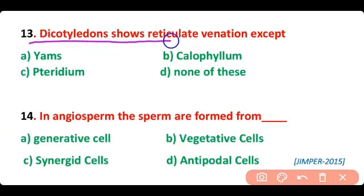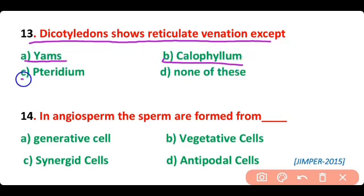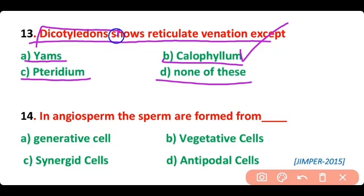Question 13. Dicotyledons show reticulate venation except: yams, Calophyllum, Trifolium, or none of these? The correct answer is option B. Calophyllum is a dicot plant that does not show reticulate venation; reticulate venation is absent in Calophyllum.